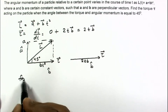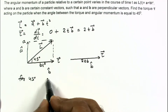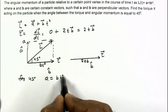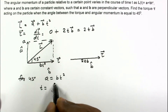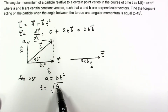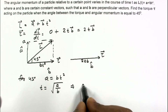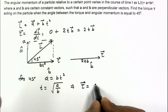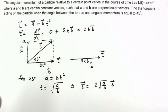For a 45-degree angle, the two components should be equal: a = bt². From here we can find time: t = √(|a|/|b|). So time is the square root of the magnitude of a divided by the magnitude of b. Substituting into the torque expression, torque = 2·√(a/b)·b vector.